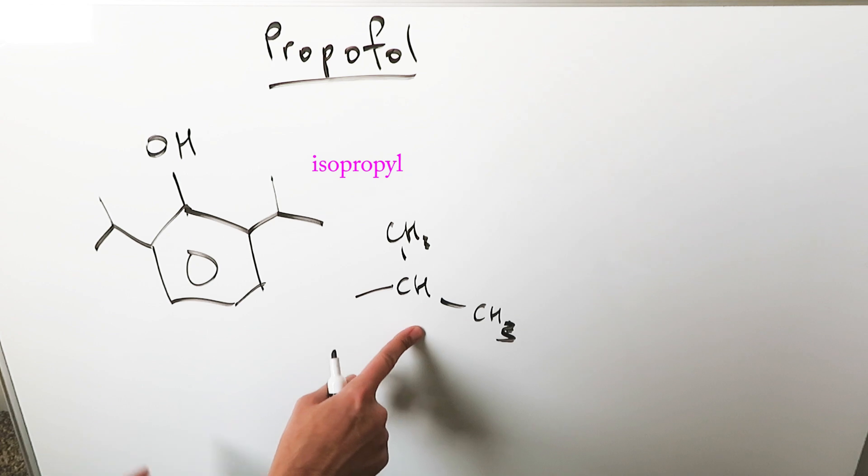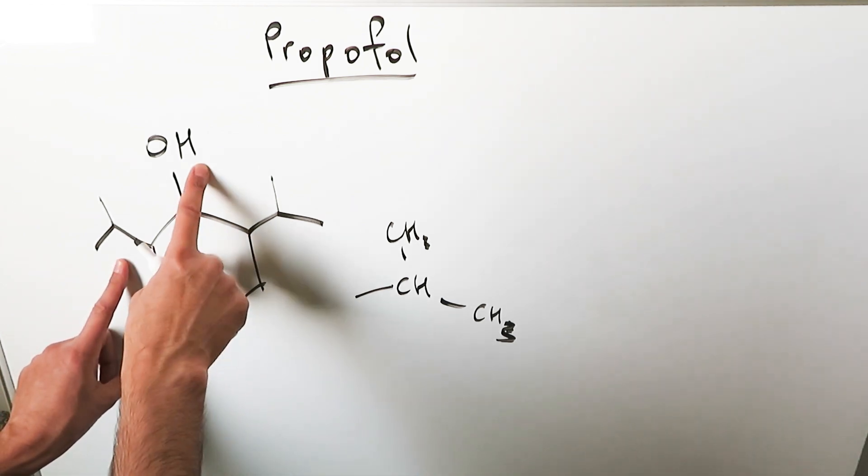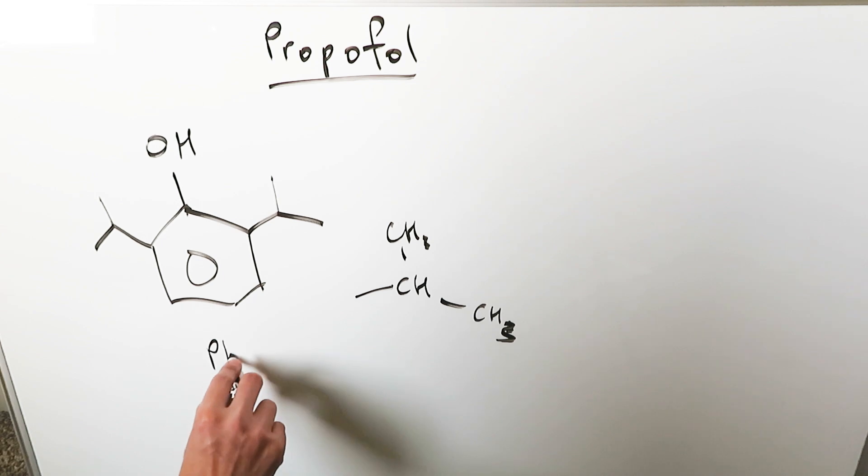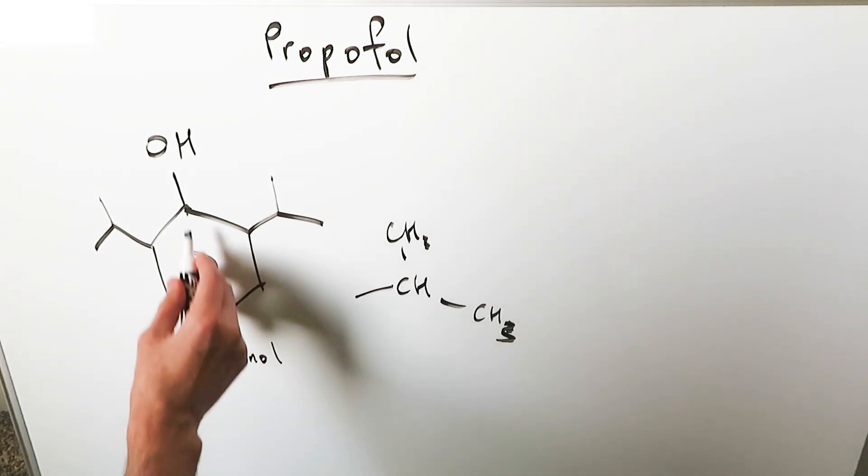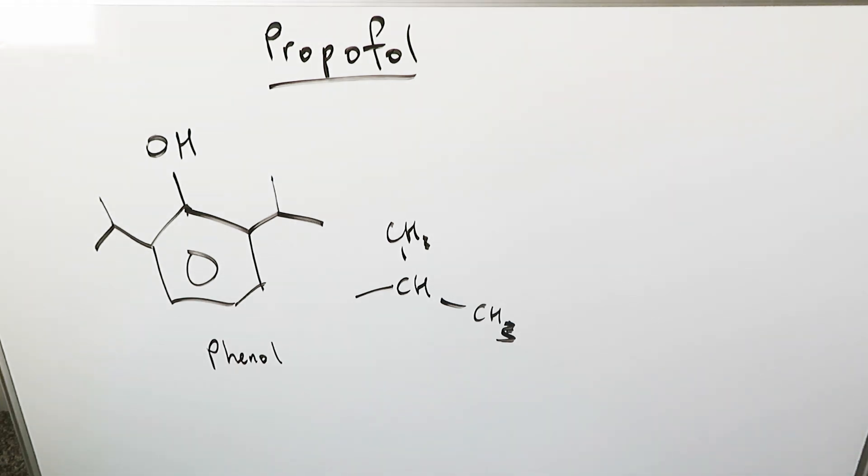It's an isopropyl group, one on this side, one on this side. I have two isopropyl groups in ortho position to the hydroxyl. I'm looking here basically at a phenol which is your hydroxy benzene to which these two isopropyl groups have been added to the ortho position.